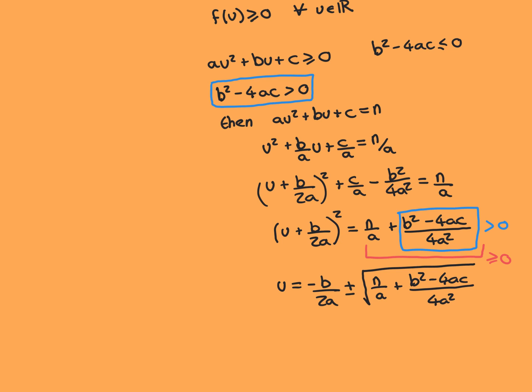So there is a u in the real line such that au² + bu + c equals this small negative number. That contradicts the fact that the quadratic function is always greater than or equal to 0. Therefore it cannot be the case that b² − 4ac > 0, and so b² − 4ac ≤ 0.